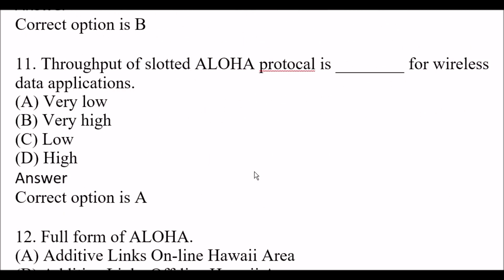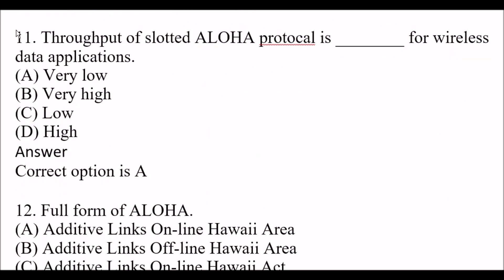Next question: Throughput of slotted Aloha protocol is blank space for wireless data applications. Option A: very low. Option B: very high. Option C: low. Option D: high. The right answer is Option A, very low. Throughput of the slotted Aloha protocol is very low for wireless data applications.